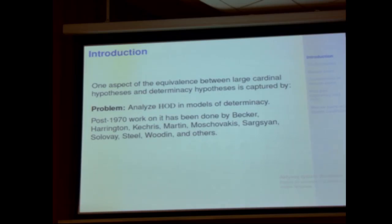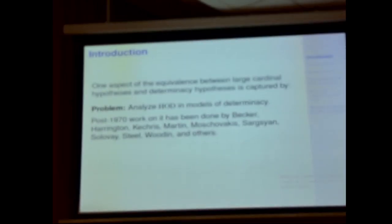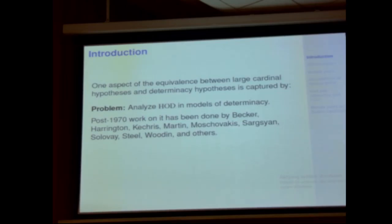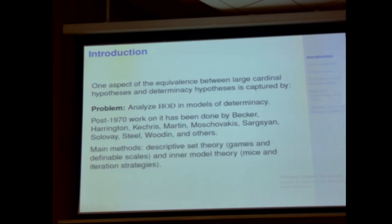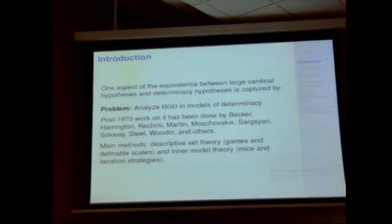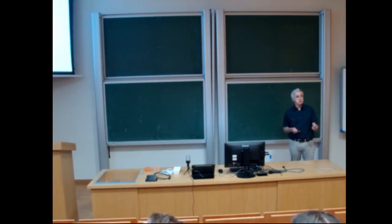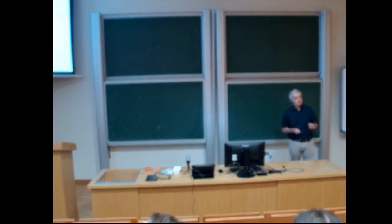HOD in the determinacy model was recognized as an important object before one understood what large cardinals were in them. In some sense it goes back to Kalini. Post-1970 work was done by people like Howard Becker, Harrington, Kechris, Martin, and Moschovakis. We're up to the 2000s now, including Sergei, Solovay, and others. The main methods on the descriptive set theory side are games and definable scales. On the HOD side — now known to be the inner model theory side — it's mice and their iteration strategies. Scales and Suslin representations are pretty much the same thing: that's the Suslin cardinals. Mice and iteration strategies: that's the mouse pair side.